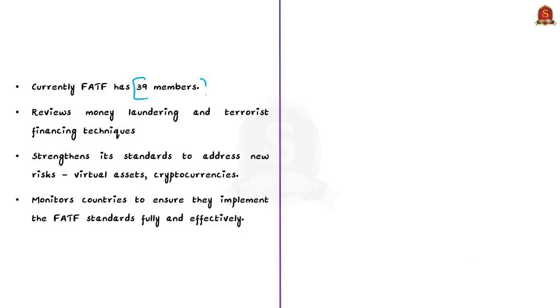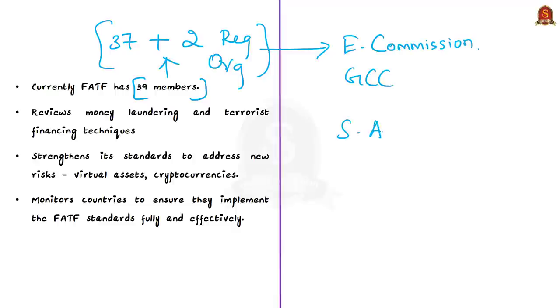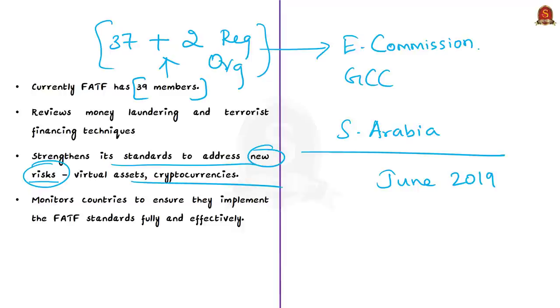It's a global money laundering and terrorist financing watchdog, an intergovernmental body which sets international standards to prevent illegal activities and harm they cause to society. FATF has developed FATF standards or recommendations, and these ensure a coordinated global response to prevent organized crime, corruption, and terrorism. It also works to stop funding for weapons of mass destruction. Currently it has 39 members: 37 countries and 2 regional organizations representing most major financial centers in the world. The regional organizations are European Commission and Gulf Cooperation Council. One of the recently joined members was Saudi Arabia, which became an FATF member in June 2019.